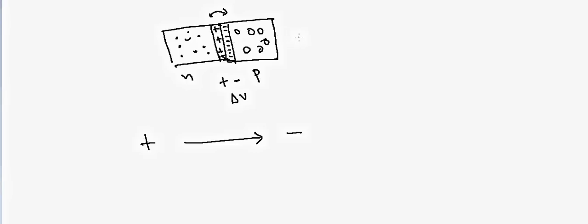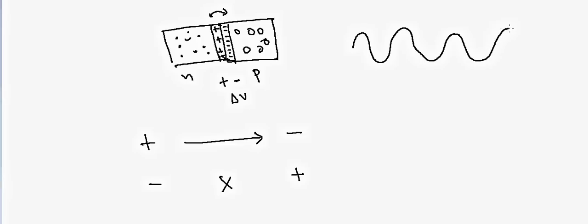However, if you apply opposite voltage — positive on the p-side and negative on the n-side — the voltage gradient in the center will oppose that voltage and there will be no flow of current. This is why the p-n junction is called a diode: it can only allow current to flow in one direction. So if we have alternating current, which flows in both directions, and we pass it through a p-n junction diode...